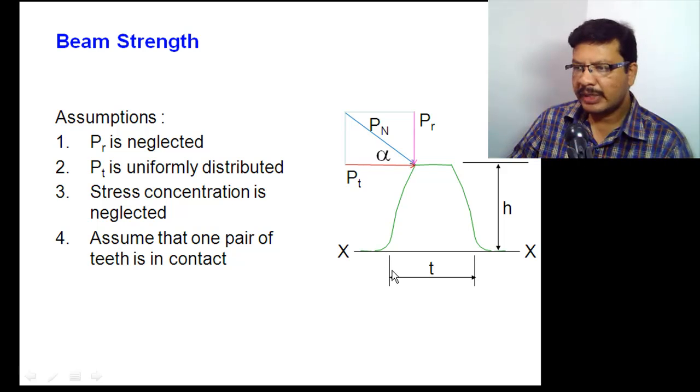The thickness of the tooth at the root is t. The height of the tooth is h. So at this section at the root, that means at the section X-X here, this gear tooth can experience bending stress. Calculate the amount of tangential force that the gear teeth can transmit at permissible bending stress. The tangential force value is called as beam strength of the gear tooth.